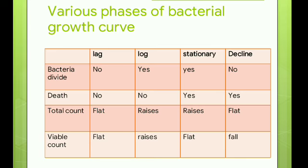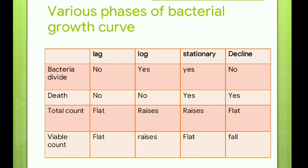In the stationary phase, bacteria divide and death of bacteria also occurs. So the total count is increasing because bacterial division is occurring, but the viable count is flat. In the decline phase, there is no bacterial division and there is death of bacteria. The total count is flat and the viable count is decreased. This is about the growth curve of the bacteria.